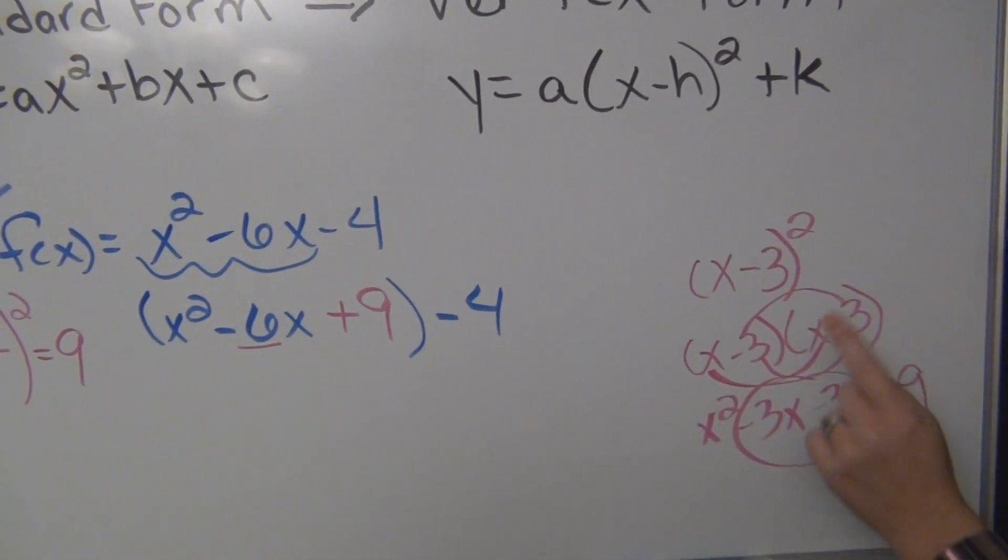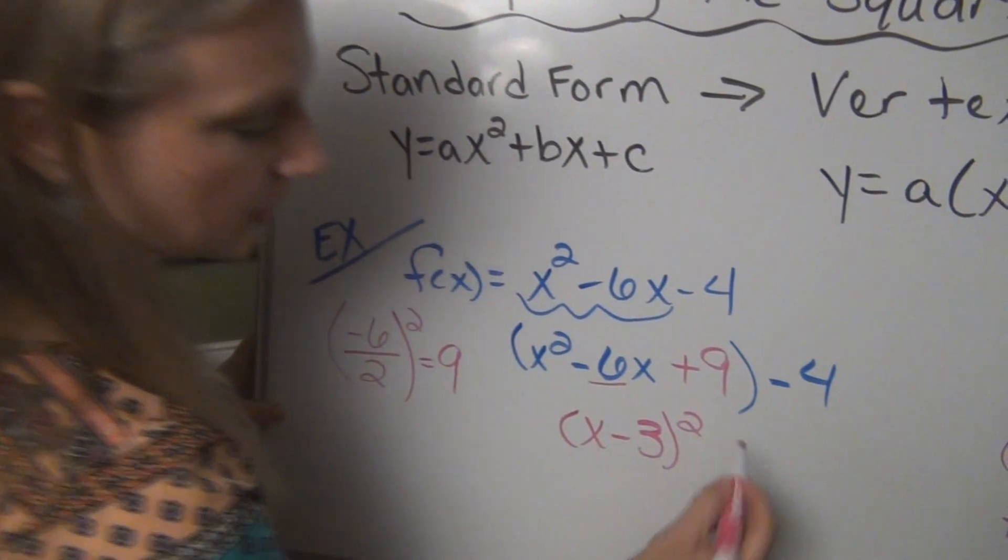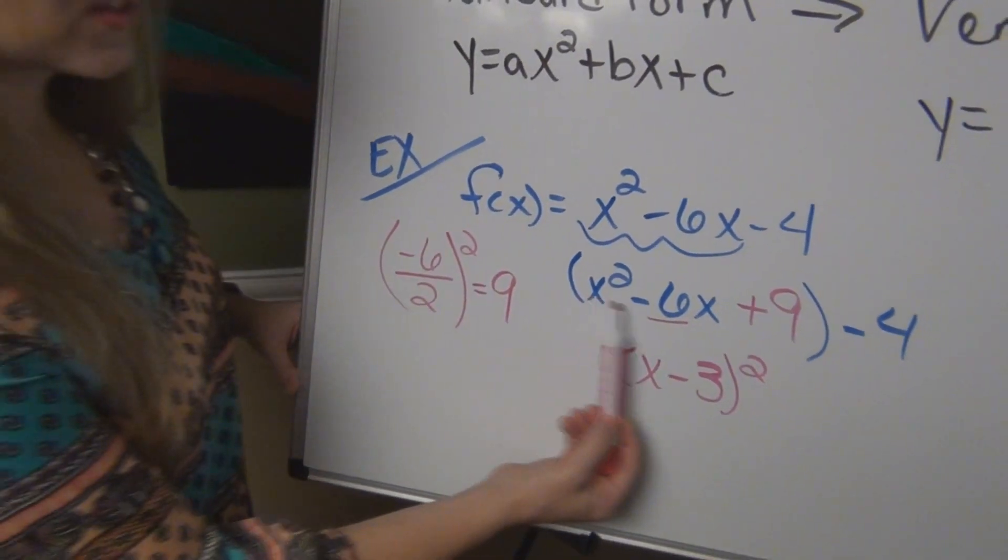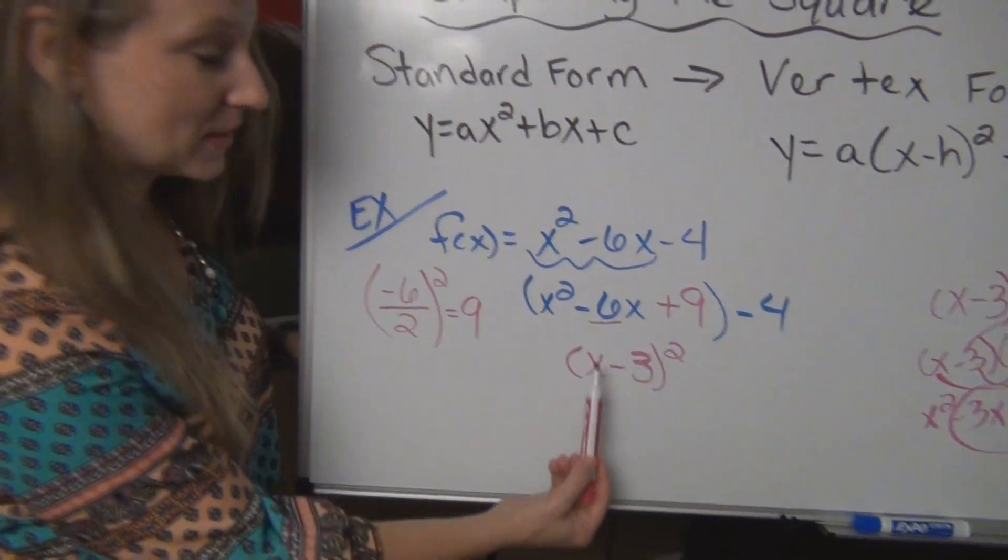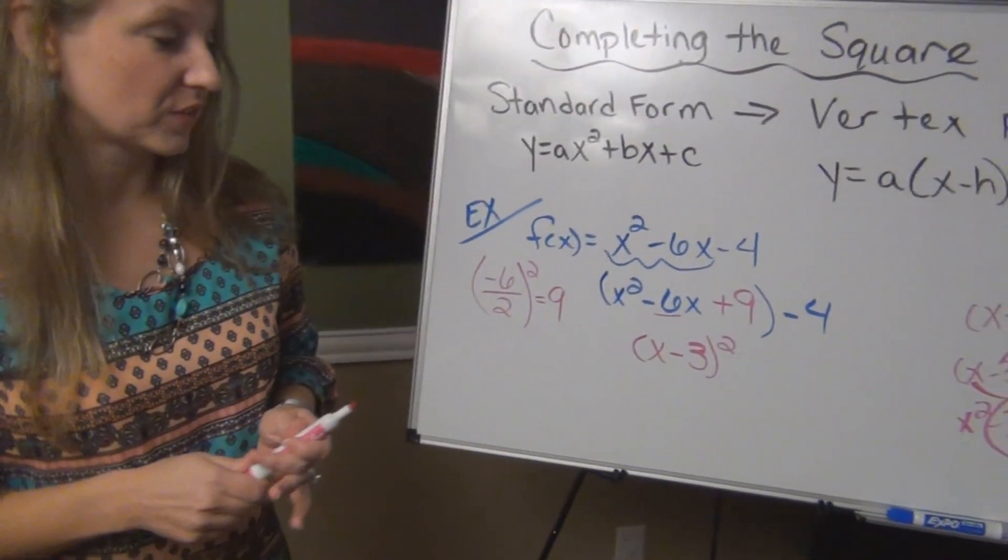So I have created this perfect square that I can now replace with x minus 3 squared. So this trinomial right here actually means the same thing as x minus 3 squared. I have made it into a perfect square.